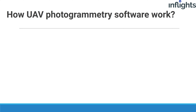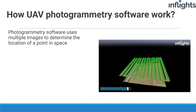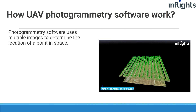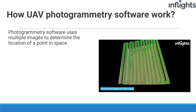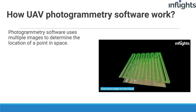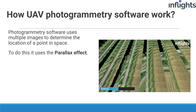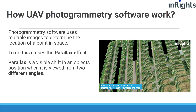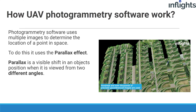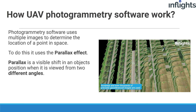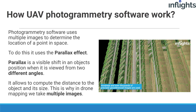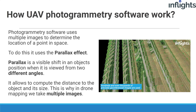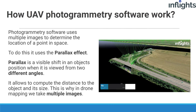How does UAV photogrammetry software work? Photogrammetry software such as PIX4D Mapper or Agisoft uses multiple images to determine the location of a point in space. To do this it uses the parallax effect. The parallax is a visible shift in an object's position when it's viewed from two different angles. It allows us to compute the distance to the object and its size.